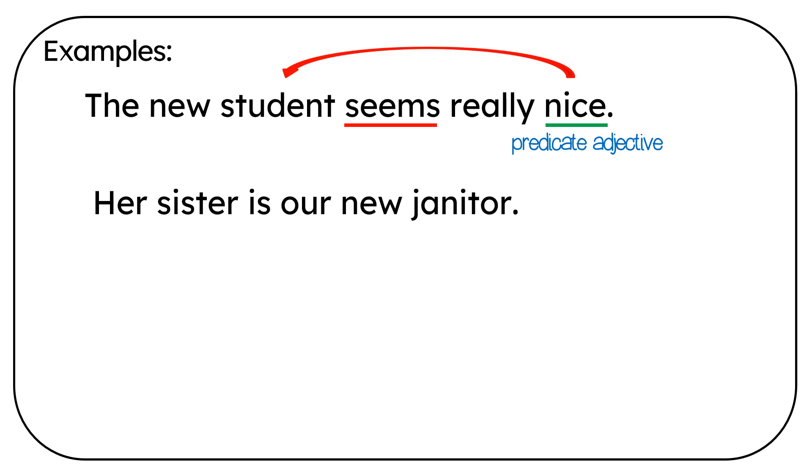Her sister is our new janitor. Is is the linking verb. Janitor is the predicate noun. It's describing sister.